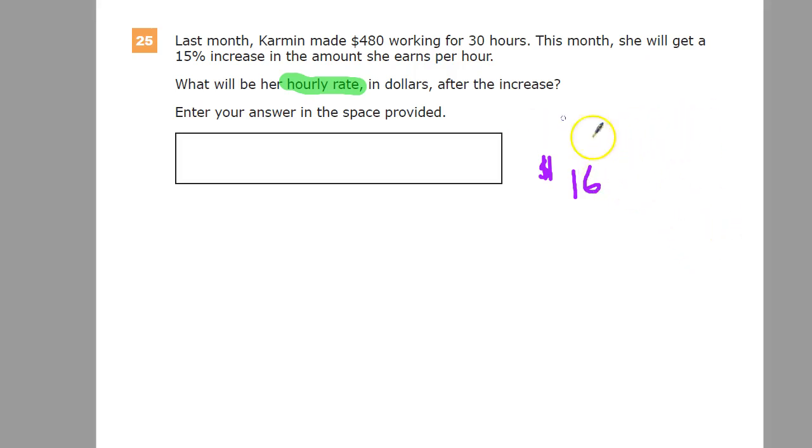So what we'll do is multiply by 15%. And remember, converting a percent to a decimal means we divide by 100. Move the decimal point over 2. So it's 0.15. So we're going to multiply 16 times 0.15.